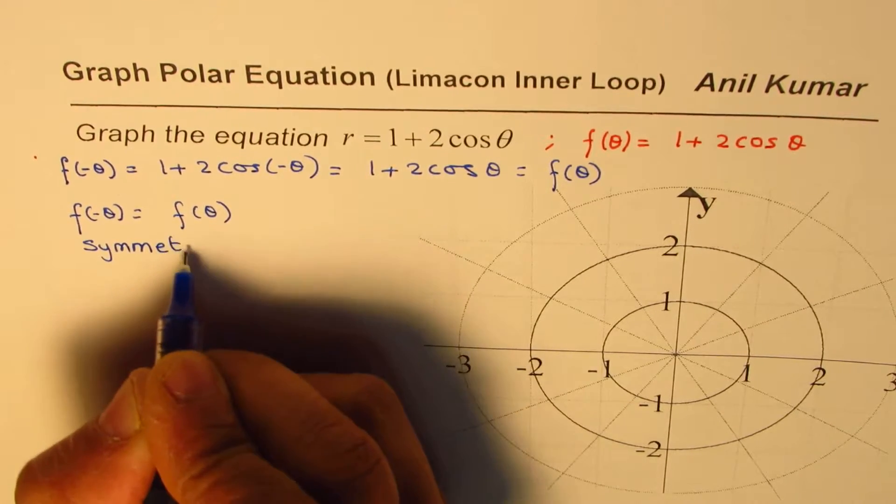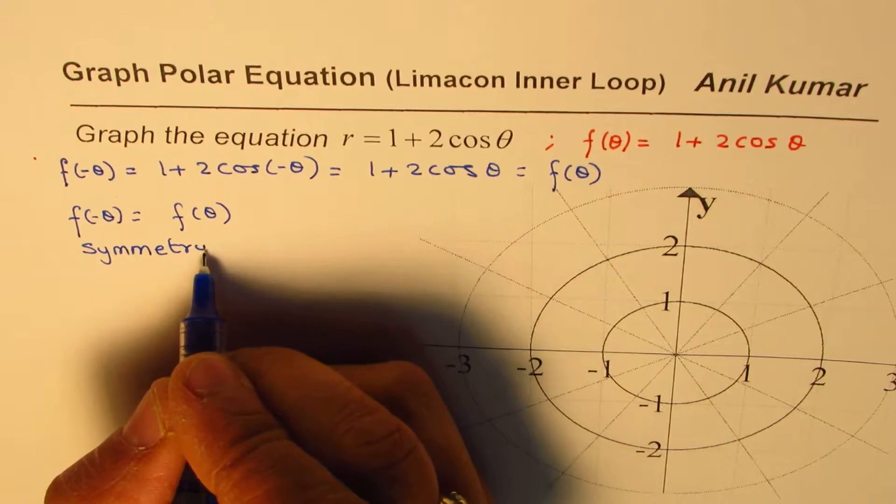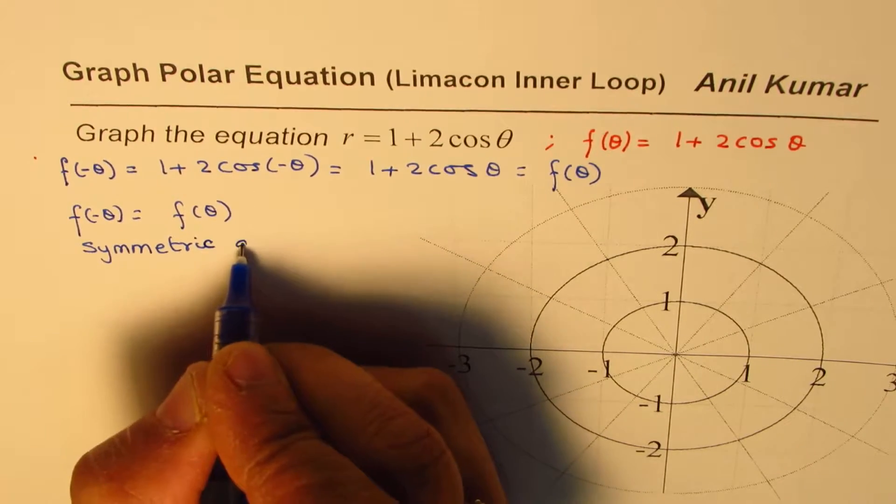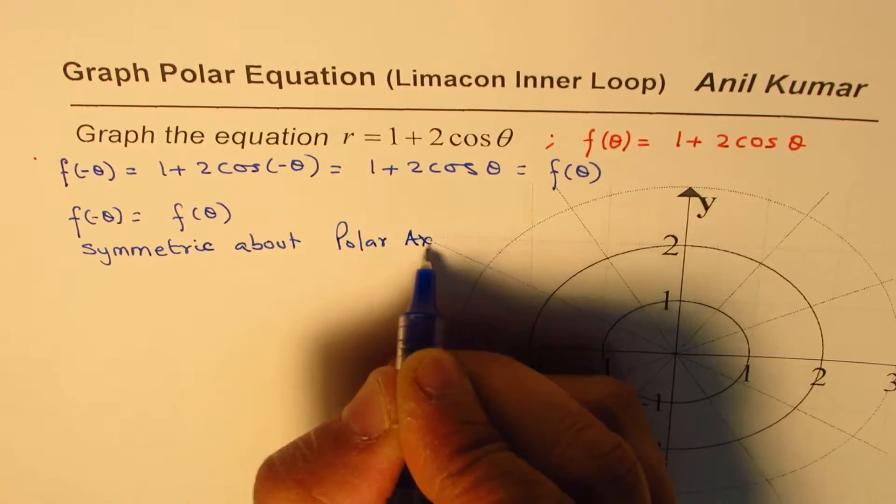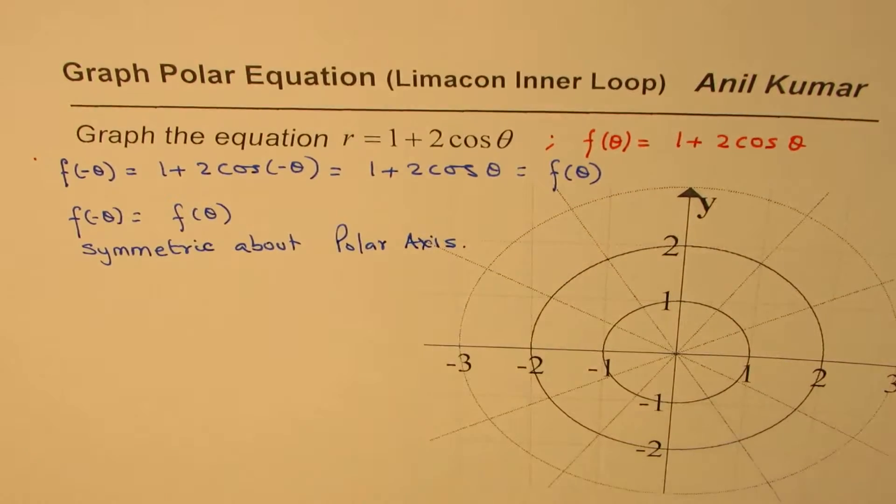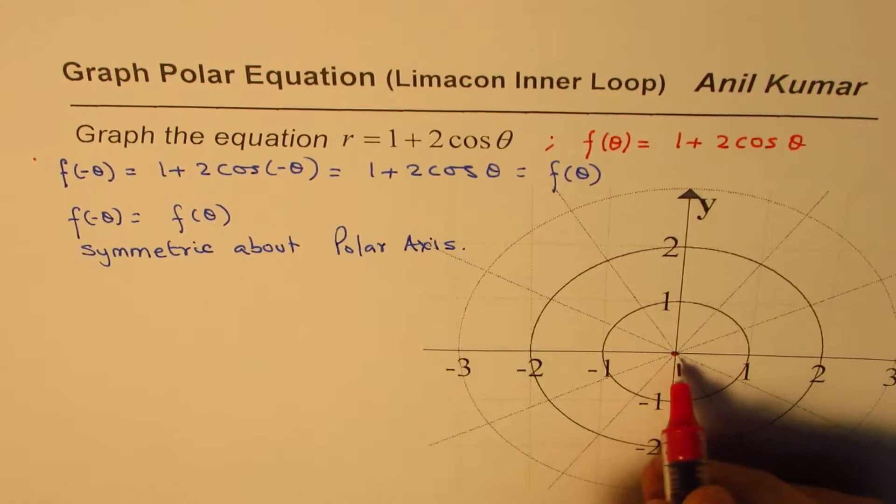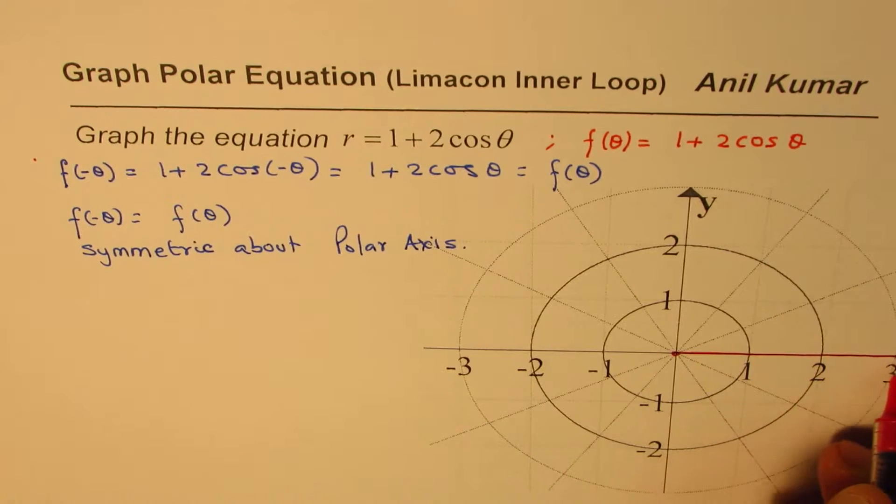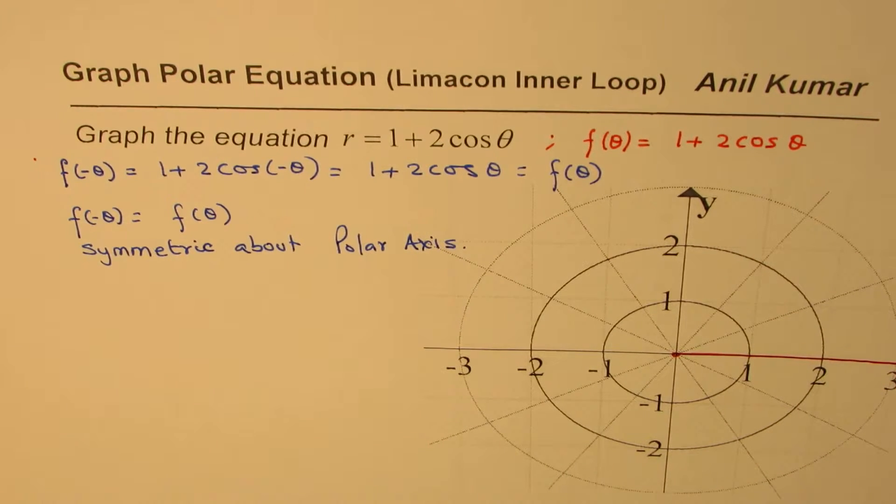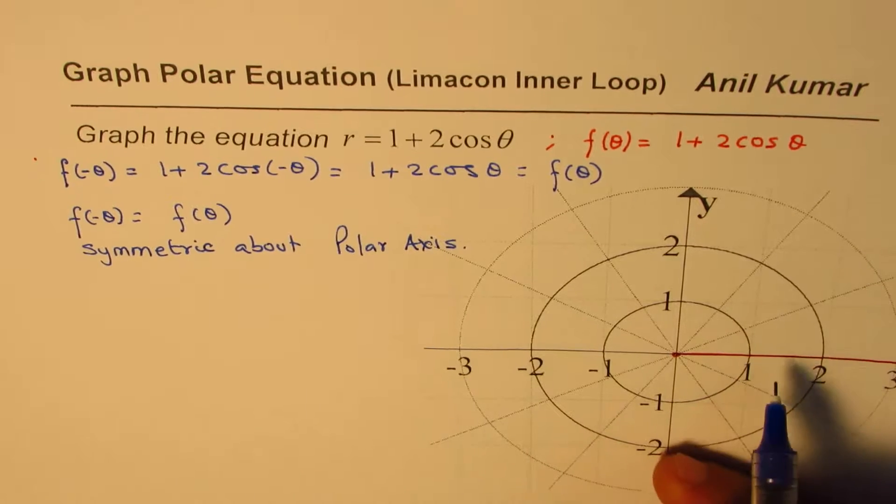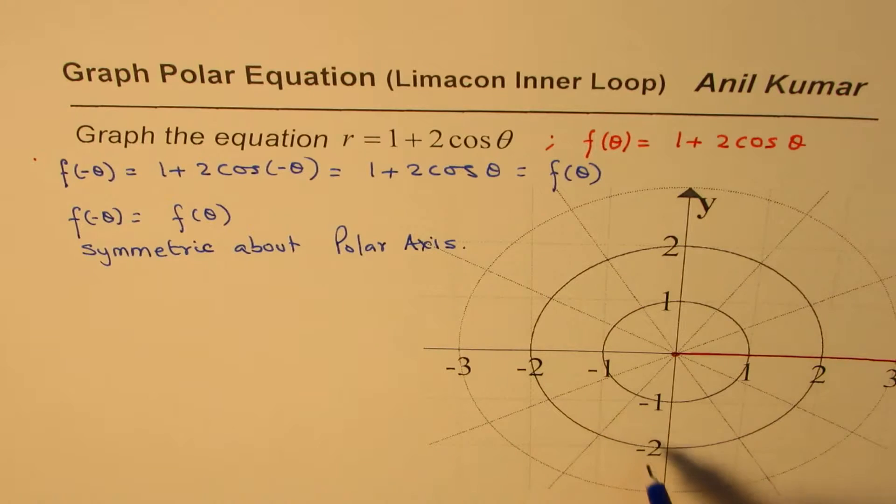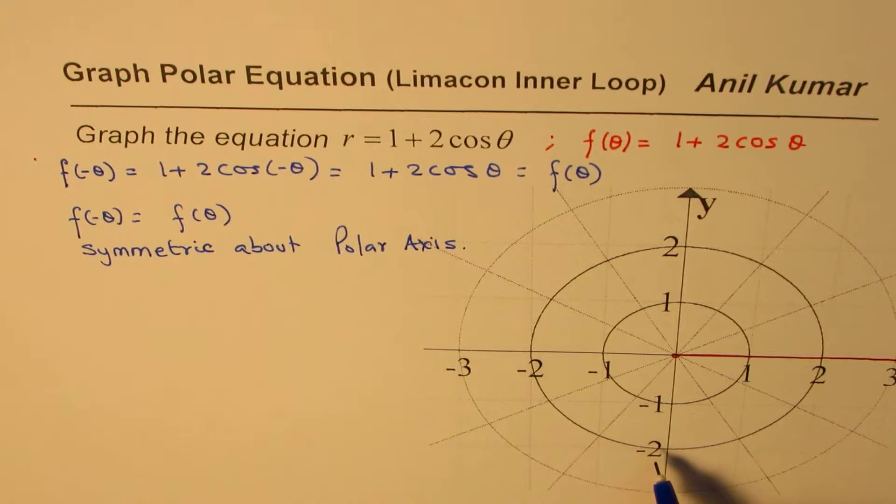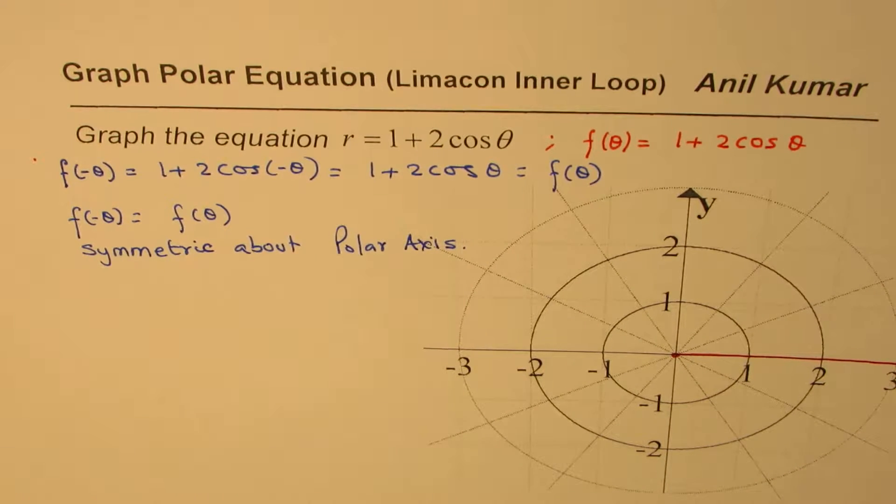Symmetric about what? Symmetric about polar axis. So that means the graph is symmetric about the polar axis. That means that we could take only the points on the upper half and then reflect them to get the other half. So it is helpful to find the symmetry.